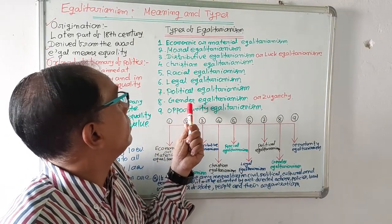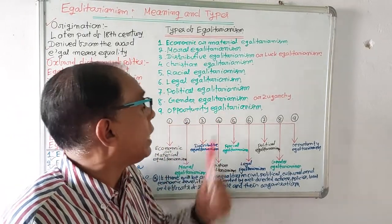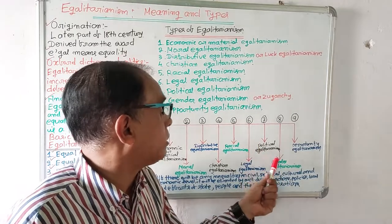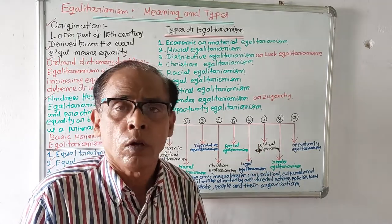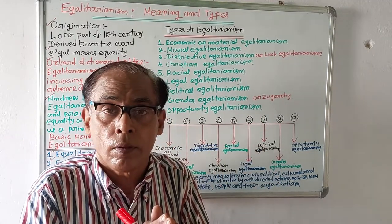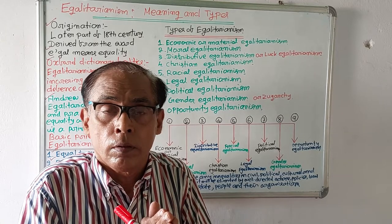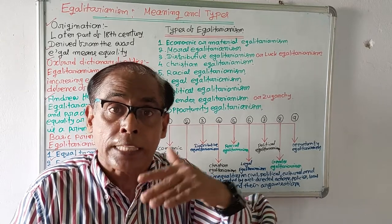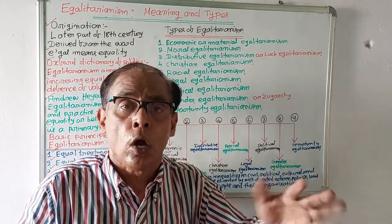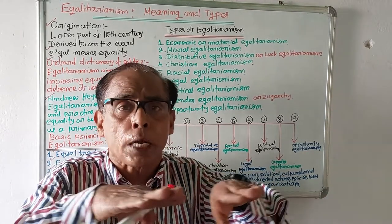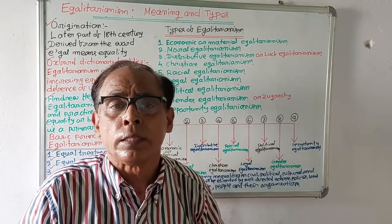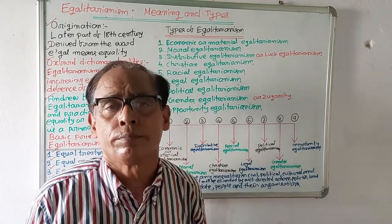Number eight: gender egalitarianism. Gender egalitarianism means both male and female are equal. Females are not inferior, males are not superior. Both males and females are equal and they will be treated equally.